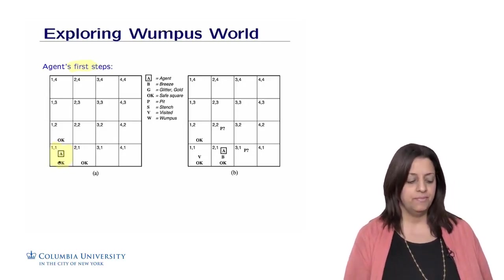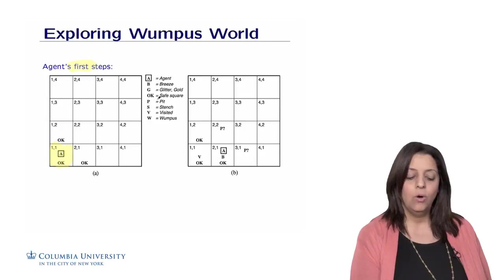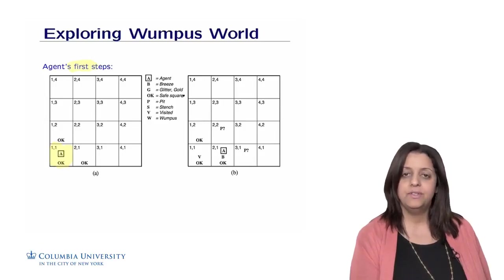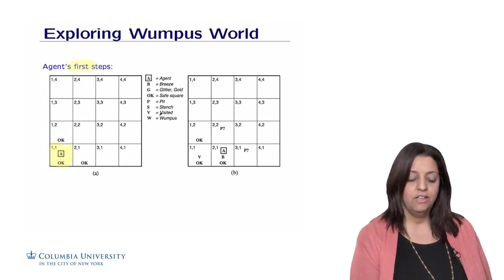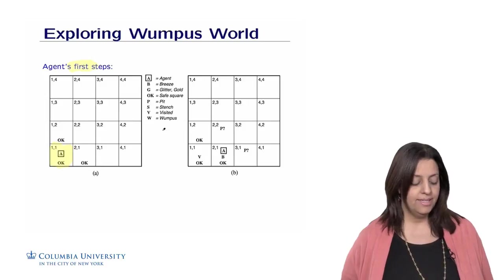This room is safe. We're going to use the symbols A for agent, B for breeze, G for glitter or gold, OK if the square or the room is safe, P for pit, S for stench, V for the room has been visited, and W for Wumpus.